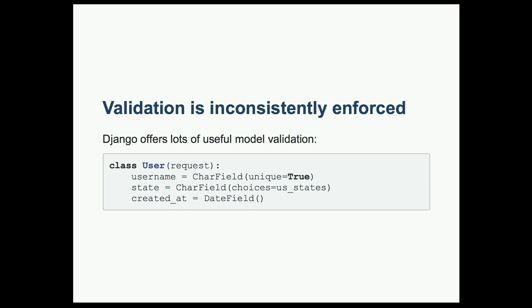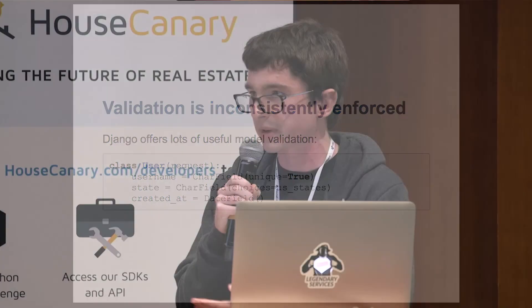Third big pitfall is that validation is inconsistently enforced. Now, one of the nice things about Django is you have all this validation out of box. You can set uniqueness. You can set choices. You can validate that a string is formatted like a date and save it in your database. But these aren't always enforced.